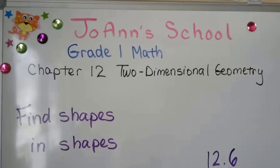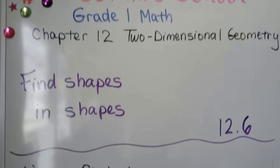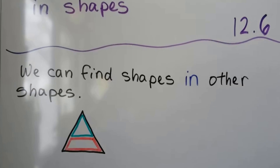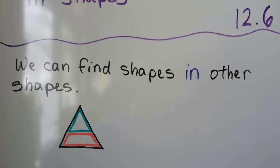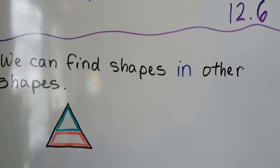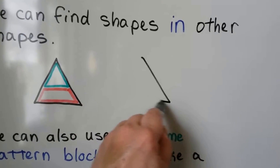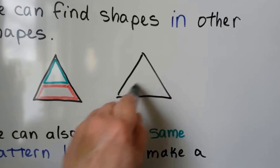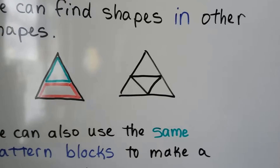Find shapes in shapes, lesson 12.6. We can find shapes in other shapes. In this triangle, we can find a little triangle and a trapezoid. We could also find four triangles.